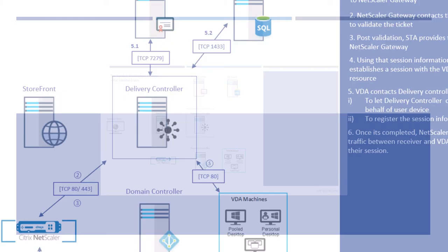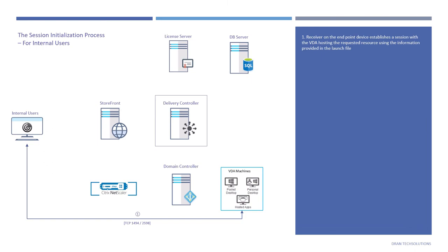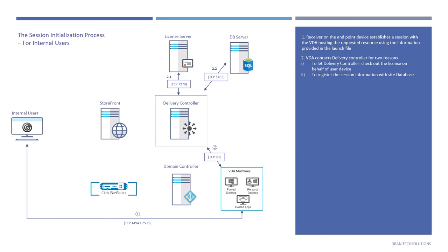Let's jump to the session initialization process for internal users. Receiver on the endpoint device establishes a session with the VDA hosting the requested resource using the session information provided in the launch file. The VDA contacts Delivery Controller for two main reasons — just like external users: to let Delivery Controller check out the license on its behalf, and to register the session information with the site database. Once completed, users can start interacting with their application and desktop.